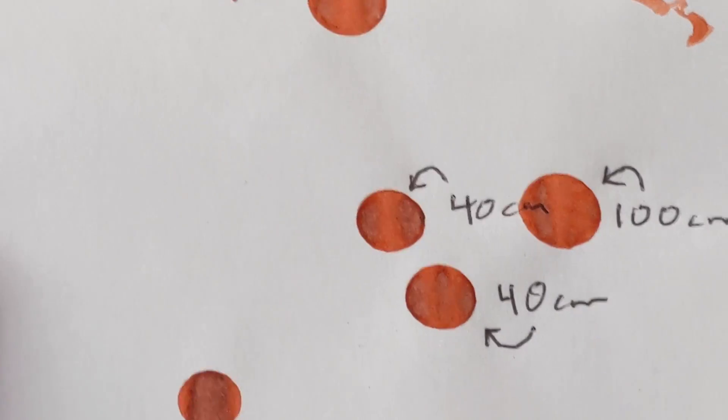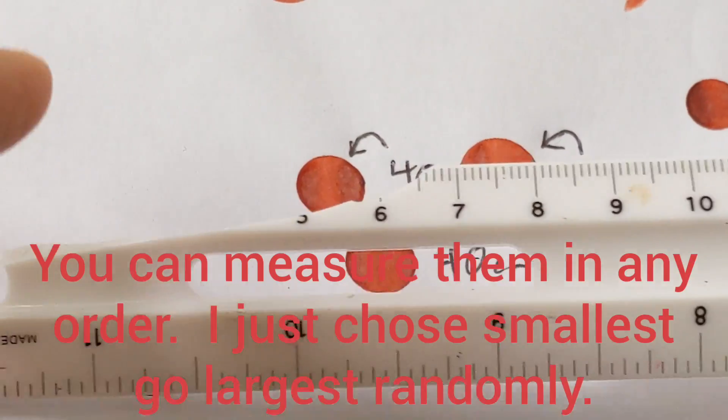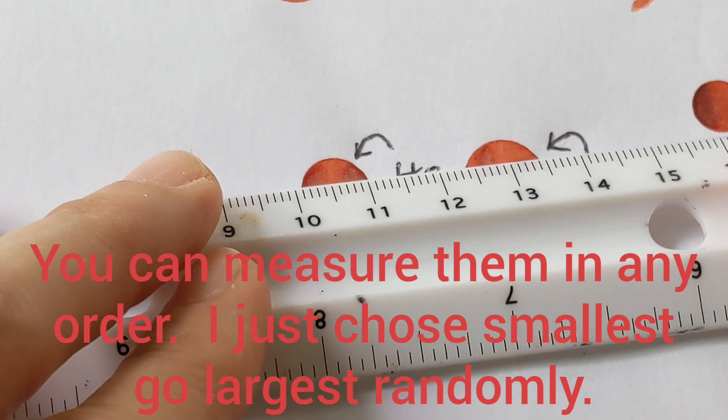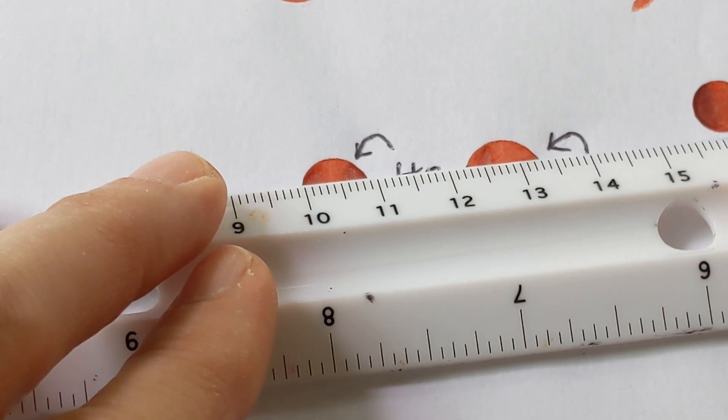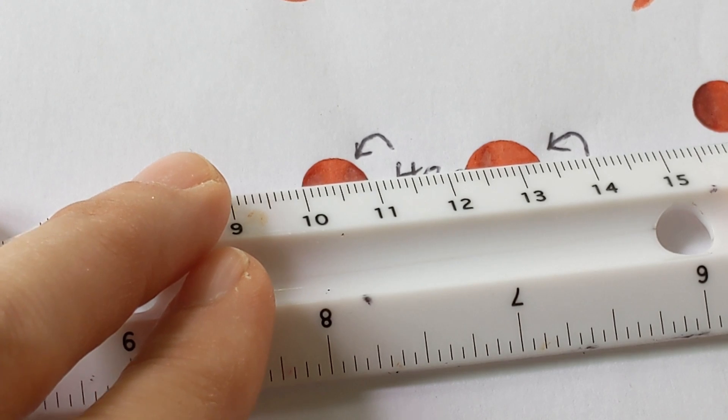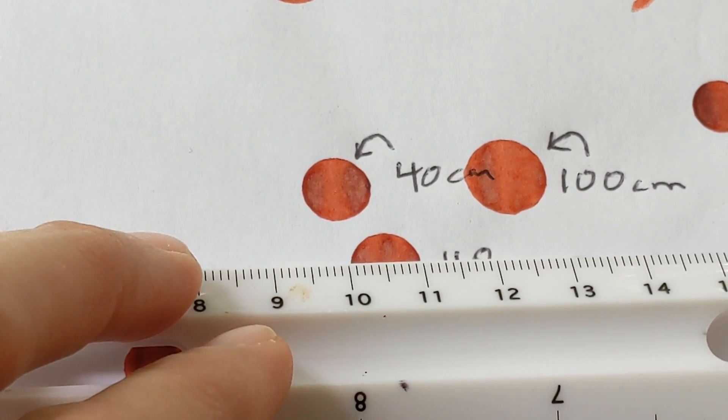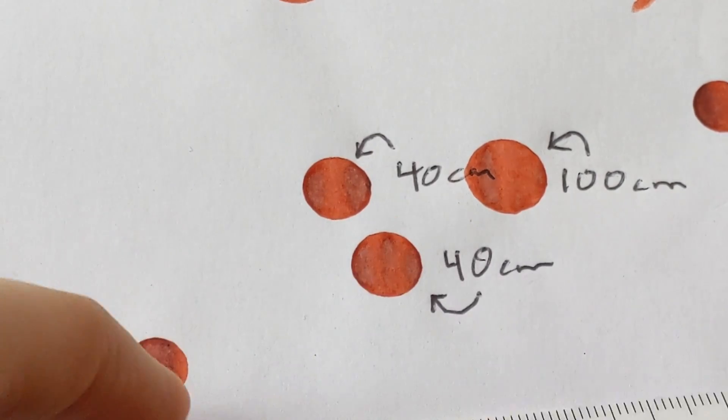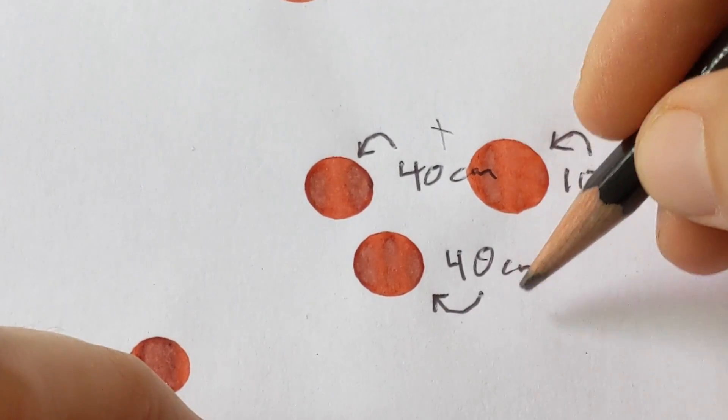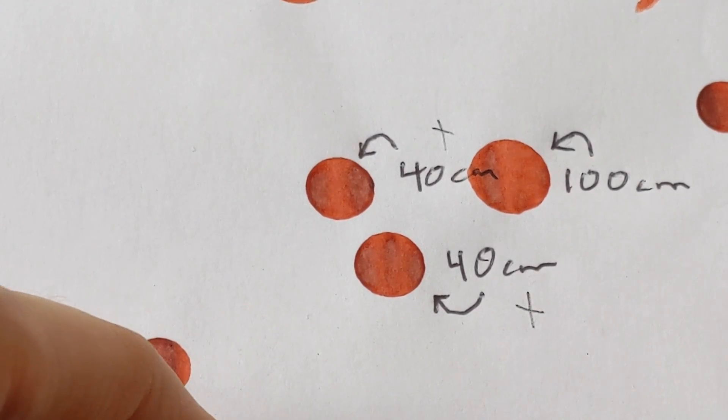Now I'm going to move to my 40-centimeter height droplets, and I seem to have two good droplets from 40 centimeters. It looks like this one is about 9 millimeters, and this one's also about 9 millimeters, so that's good. That means we have precision that the same height is ending up with the same diameter.